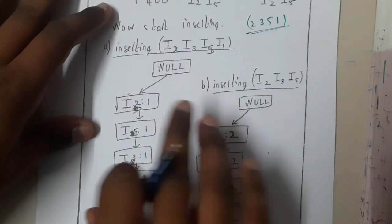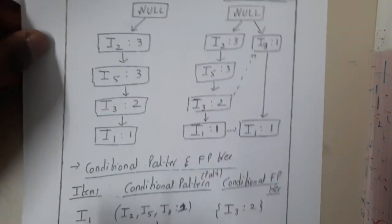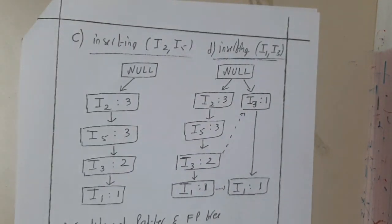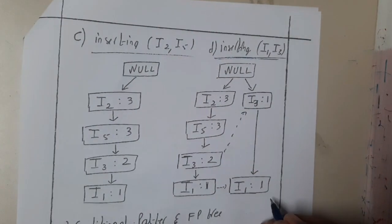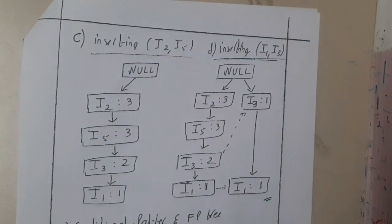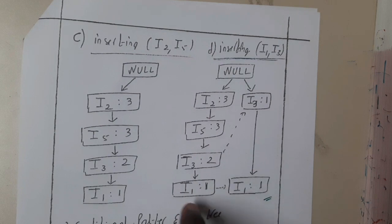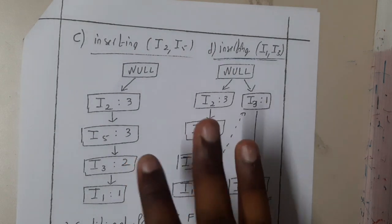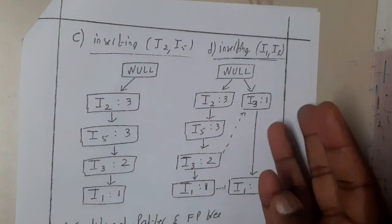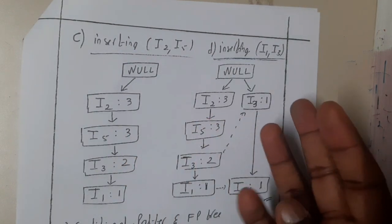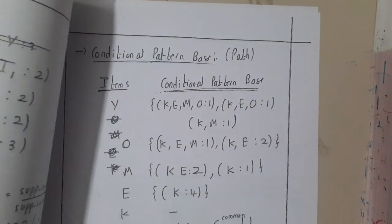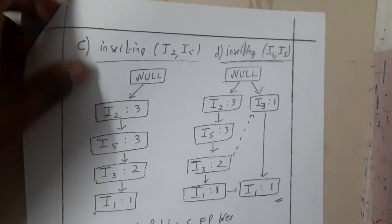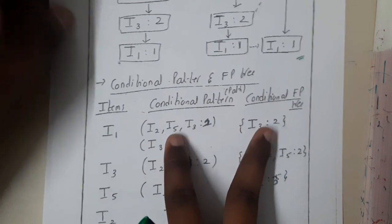I hope everyone remembers how to insert into the FP-tree; if not, just watch the previous lecture. After inserting, you will get a resulting tree. Recall that after this step we filled three tables: the first for conditional pattern base, the second for conditional FP-tree, and the last for frequent patterns.